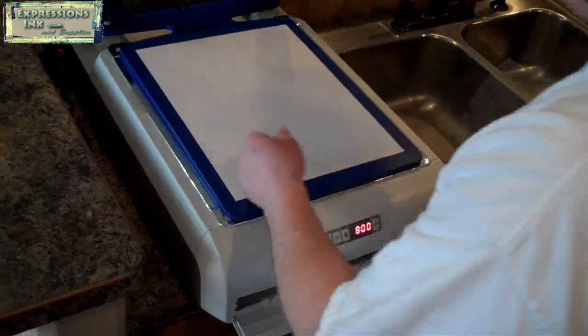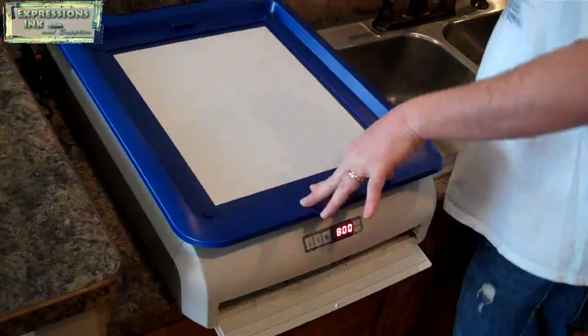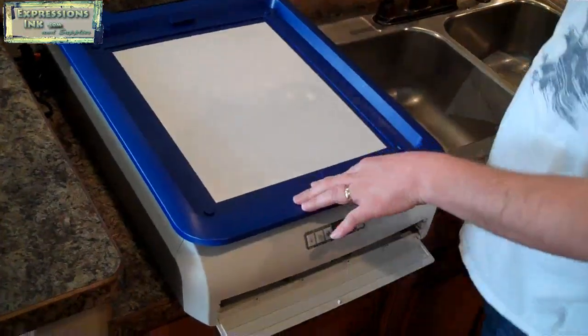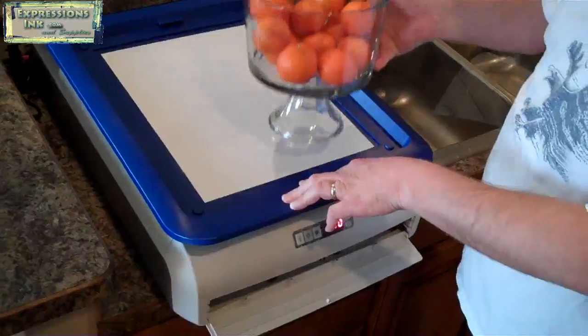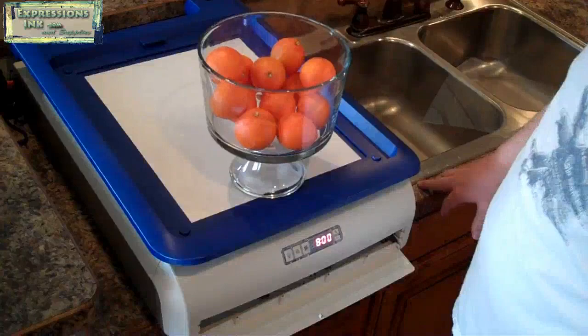We can go ahead and close our top down. It's best to put something that weighs a few pounds on top of this while this part's happening. We've got a nice bowl of oranges here, and that just helps to keep that nice tight seal.